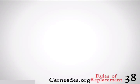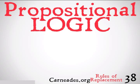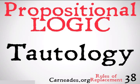Welcome back to 100 Days of Logic with 90 Second Philosophy and Carneades.org. Today we're going to be continuing with propositional logic and the rules of replacement, looking at our very last rule of inference called tautology. This is arguably the simplest and most intuitive of all the rules. Let's take a look at some examples.